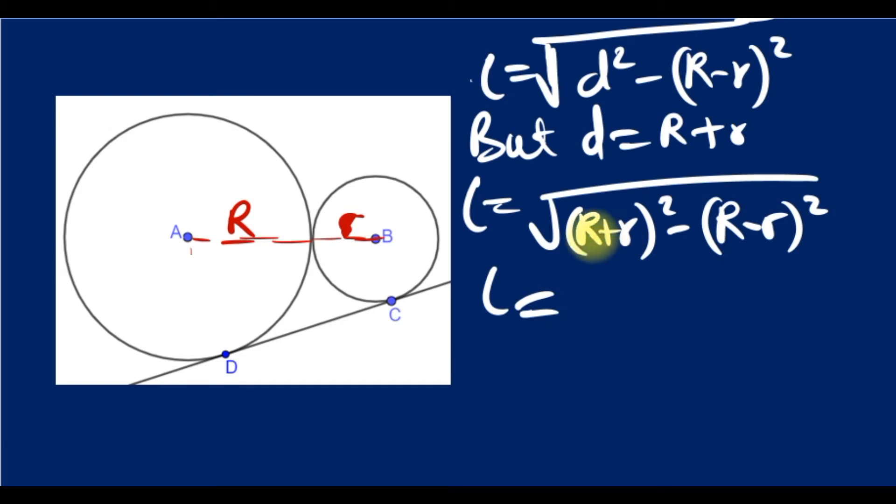Using difference of two squares, we have 4Rr. Square root of 4 is 2, so this is 2√(Rr). This is the formula when the two circles touch, when there is contact between the two circles.